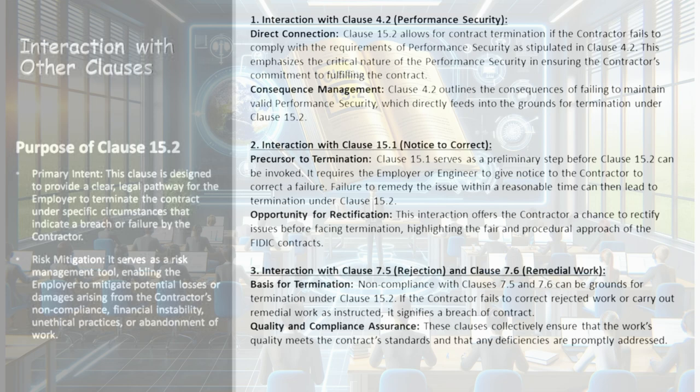Interaction with Clause 15.1 — Notice to Correct: Clause 15.1 acts as a preliminary measure before invoking Clause 15.2. It necessitates the issuance of a notice to correct a failure by the contractor, with the failure to remedy this leading to potential termination under Clause 15.2. This interplay provides the contractor with an opportunity to resolve issues prior to facing termination, showcasing the fair and procedural nature of FIDIC contracts.